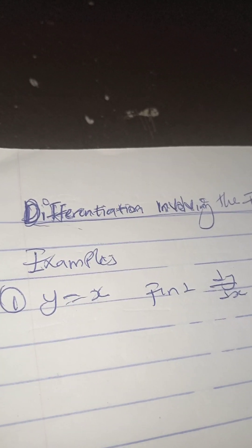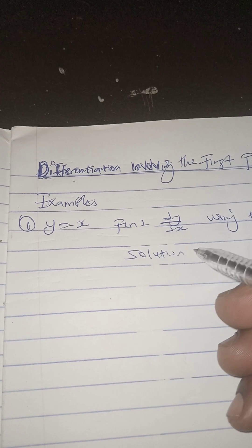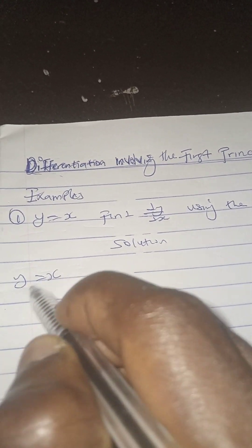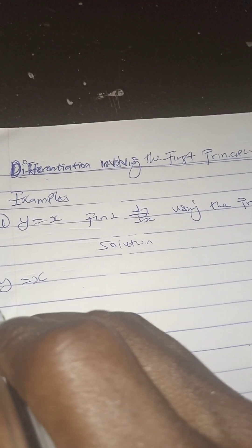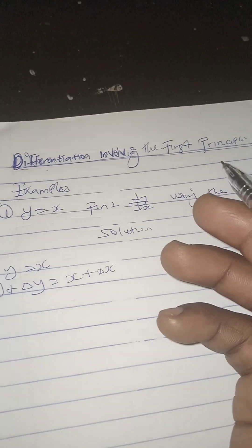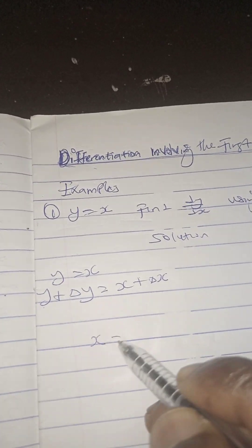So if we see something like this, what are we going to do? It is very easy. The first step — we write the solution. We say y is equal to x, and then we write y plus δy is equal to x plus δx.